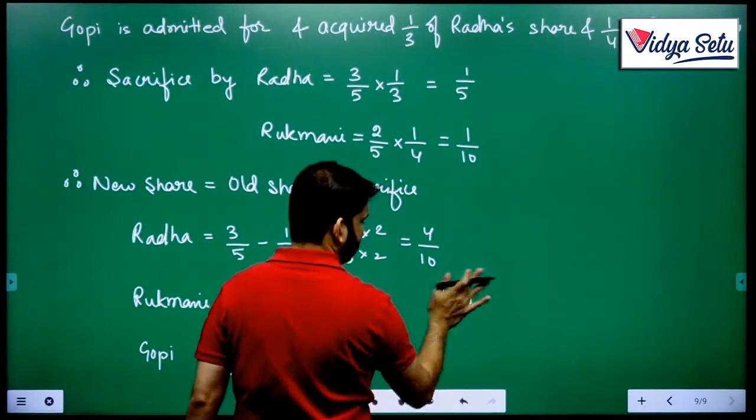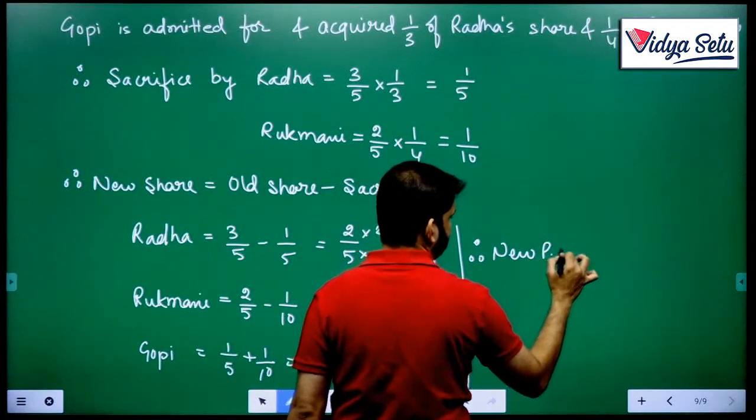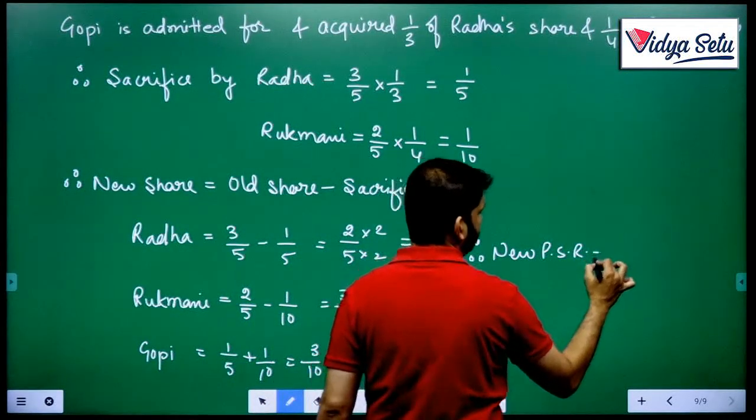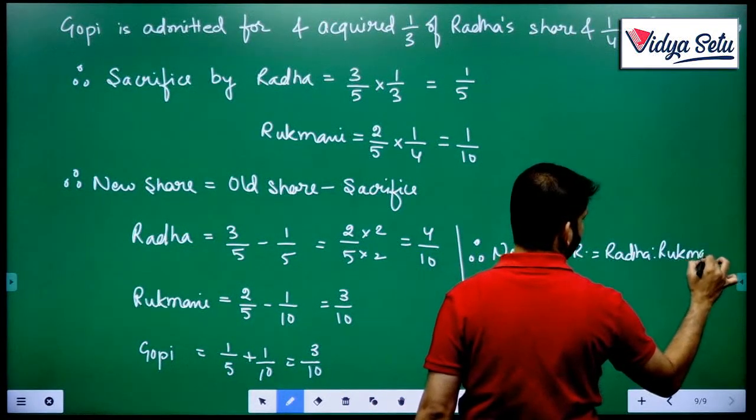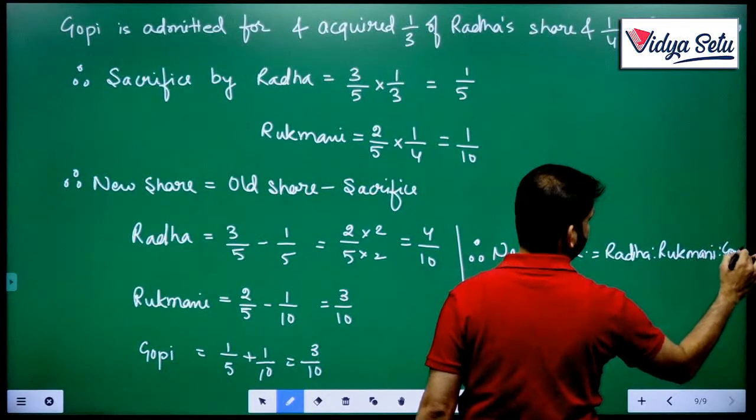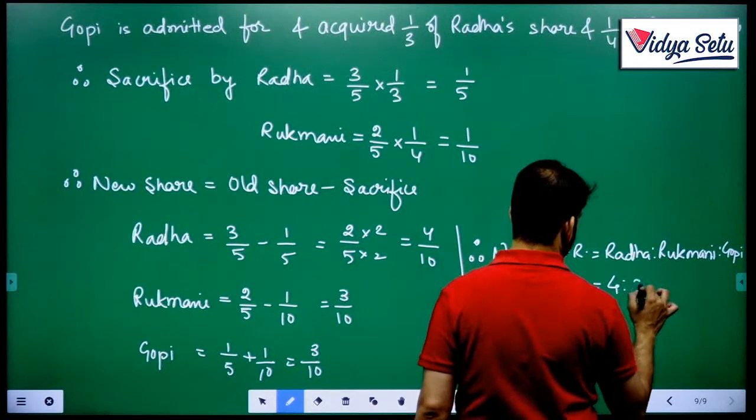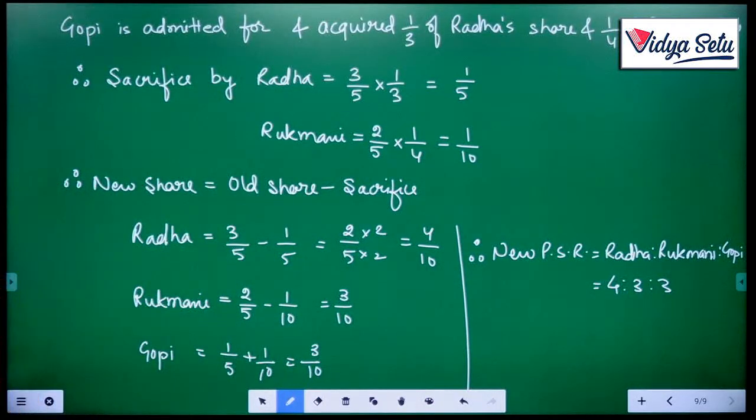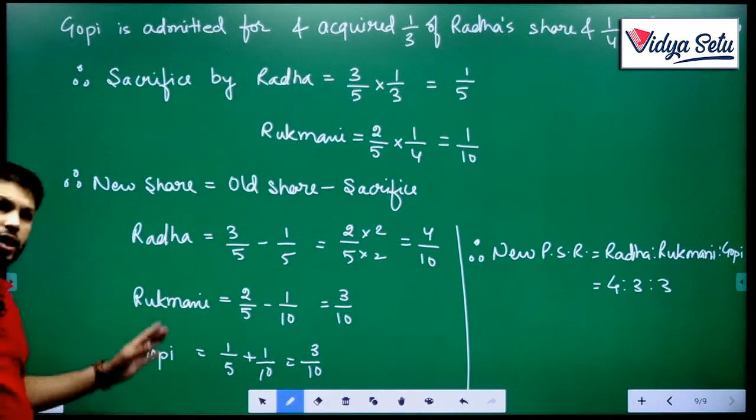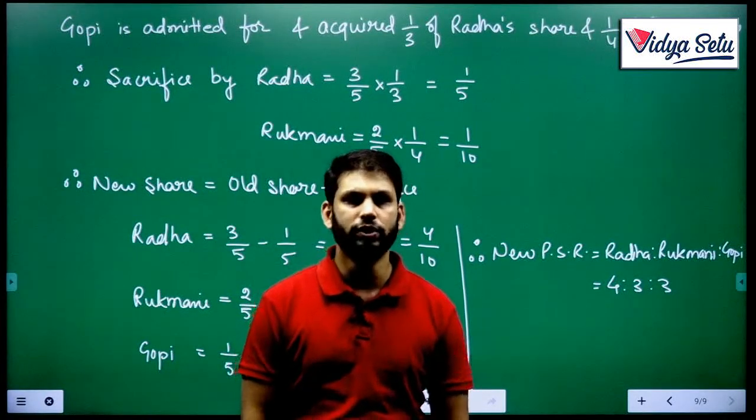Therefore, new profit sharing ratio is 4/10, 3/10, 3/10. So 4 is to 3 is to 3. And we got our answer 4 is to 3 is to 3. So we have done with question number 7, 8, 9 in this video, we will be doing next question in the next video. Thank you.